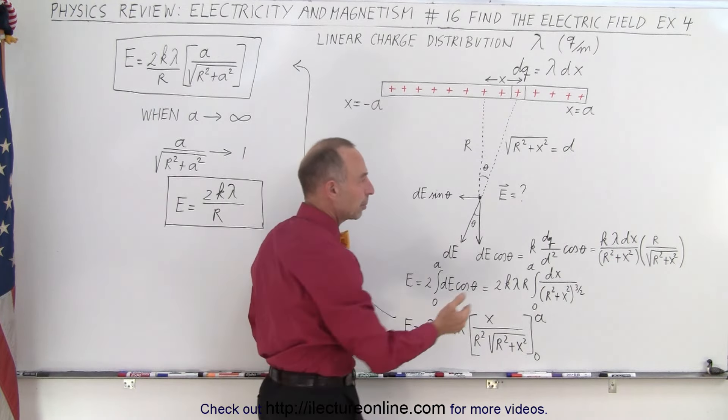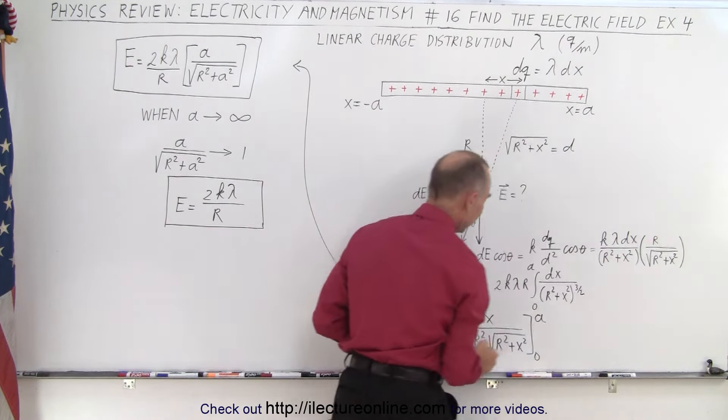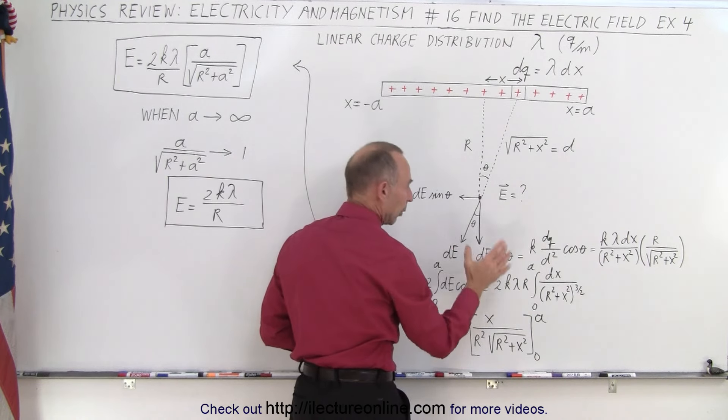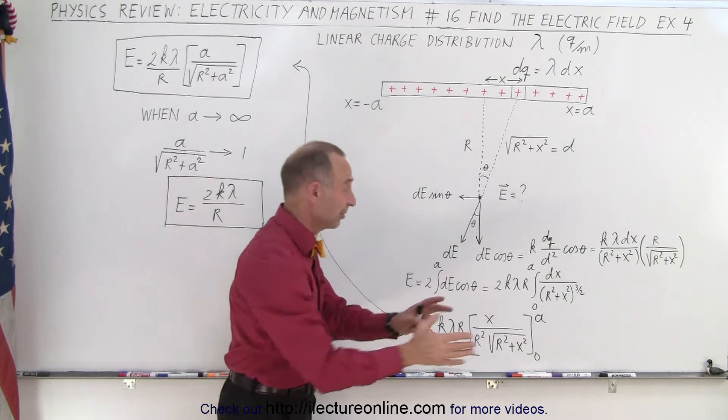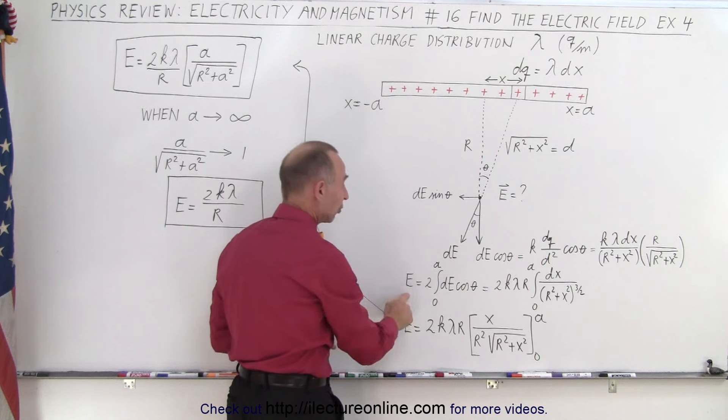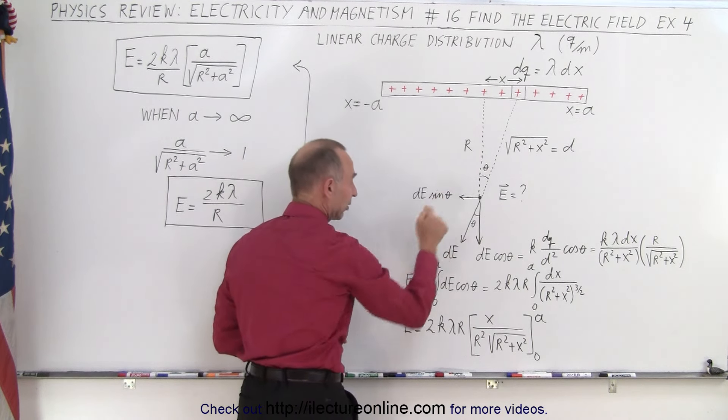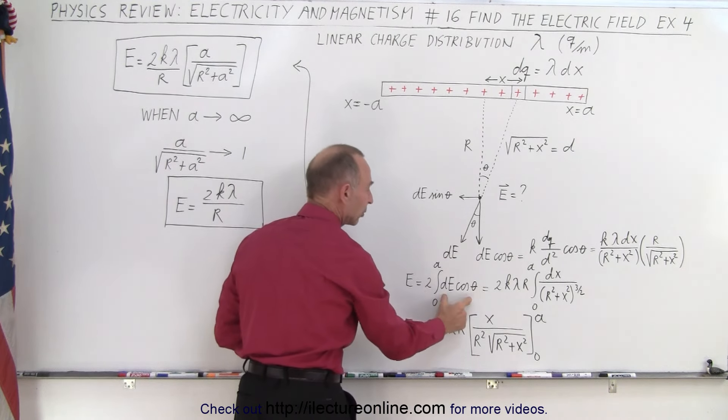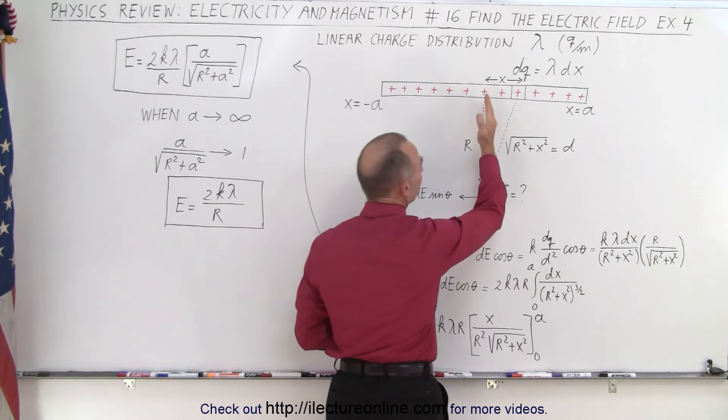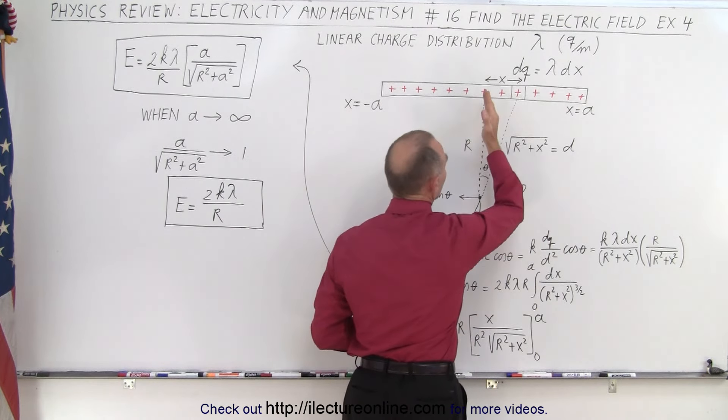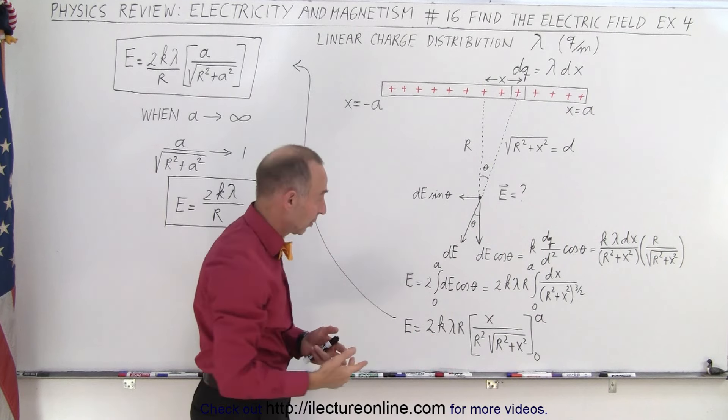And then when we combine the two and we pull out an r because that's constant, we're going to integrate that. So to find the total electric field at this point, that's equal to twice the integral of the contribution of a half side, so we're going to integrate from zero to a and simply double that.